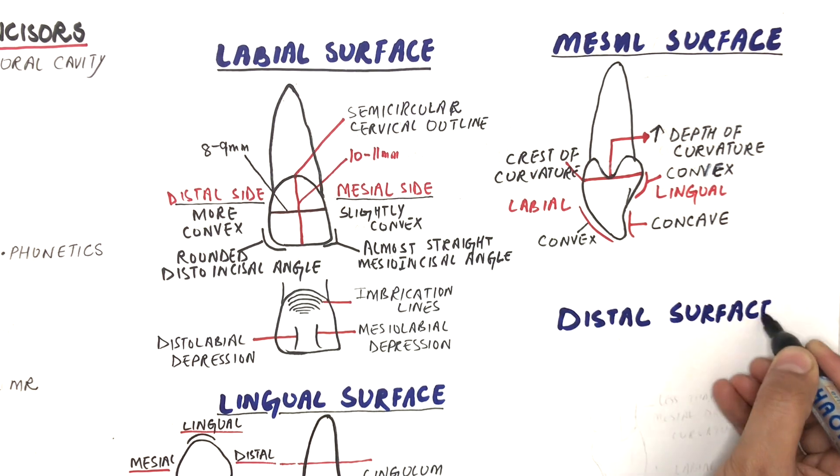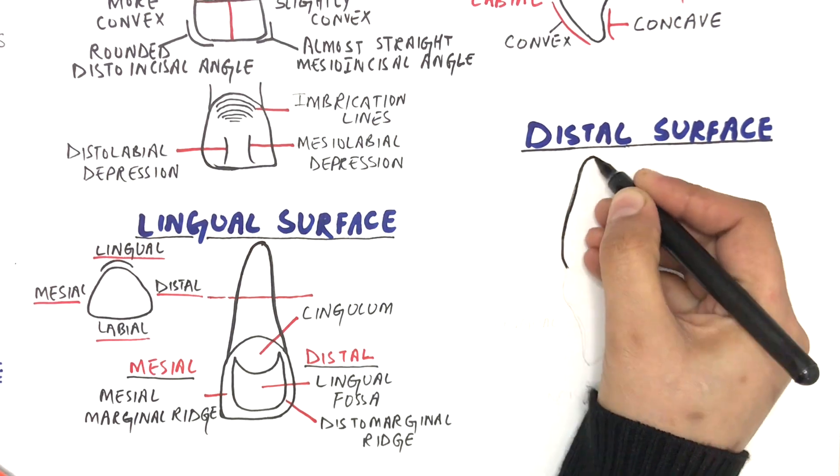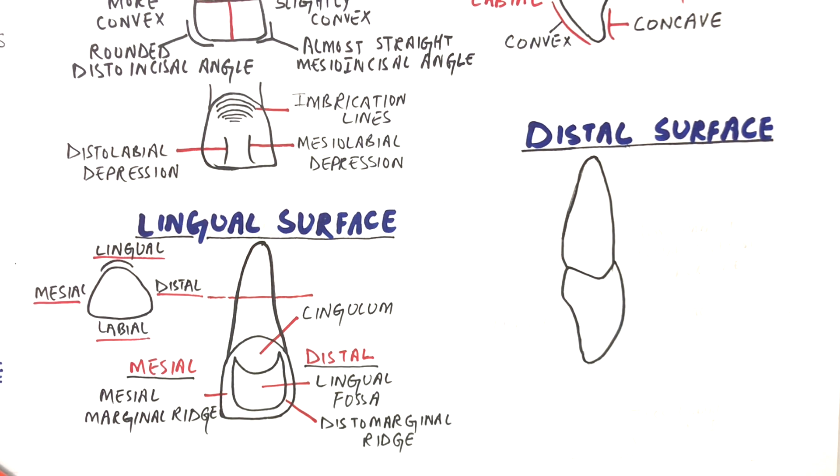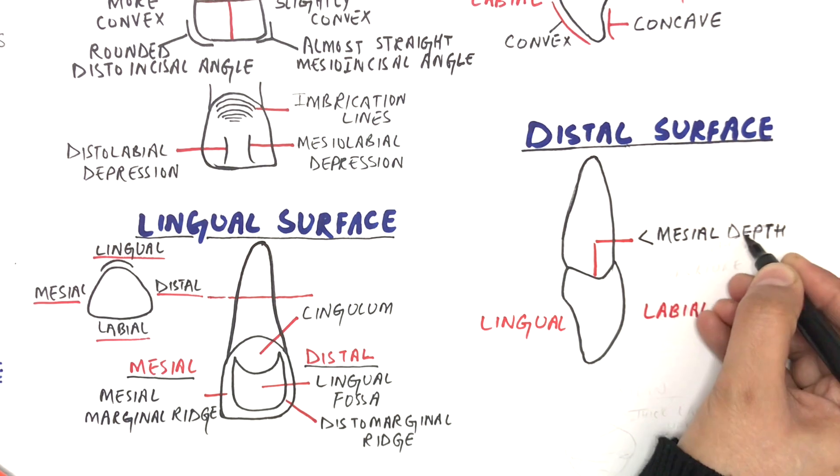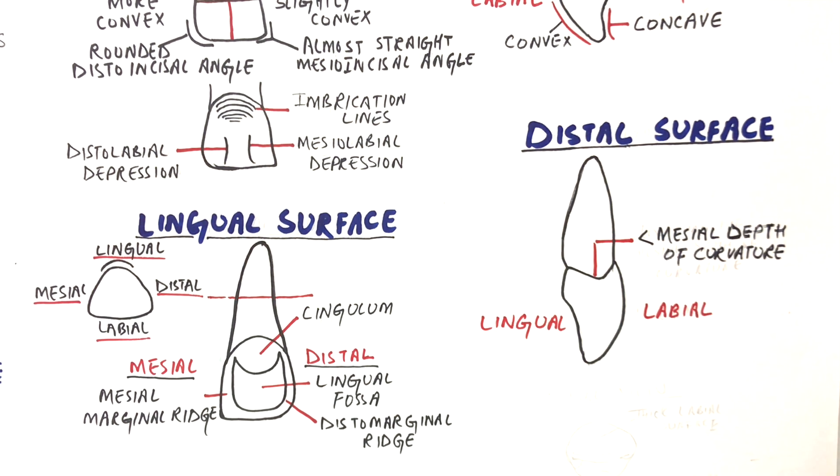Distally, the crown is thicker at the incisal end as compared to the mesial surface. The curvature of the cervical outline is much less in extent compared to the curvature of cervical outline at the mesial surface.